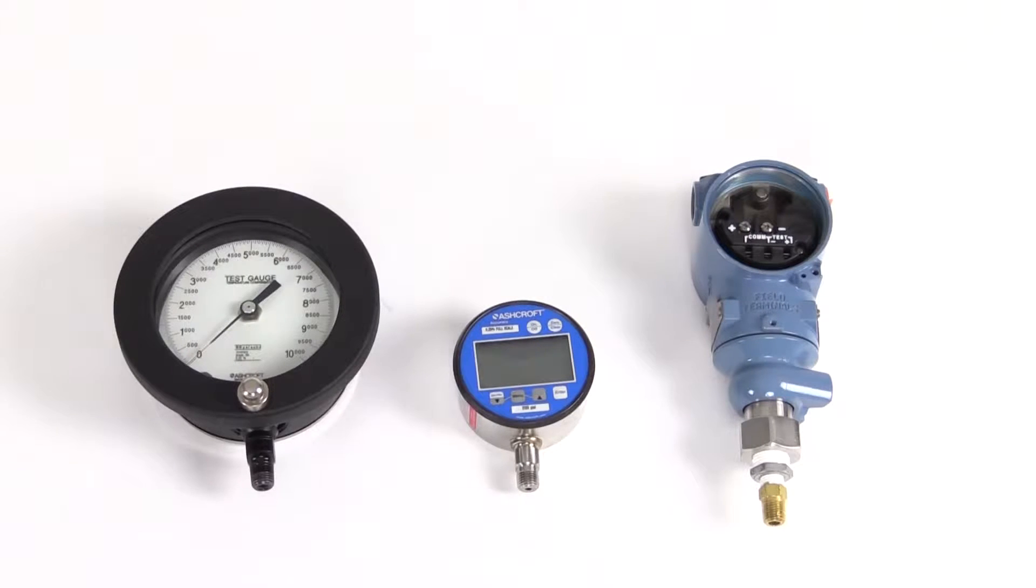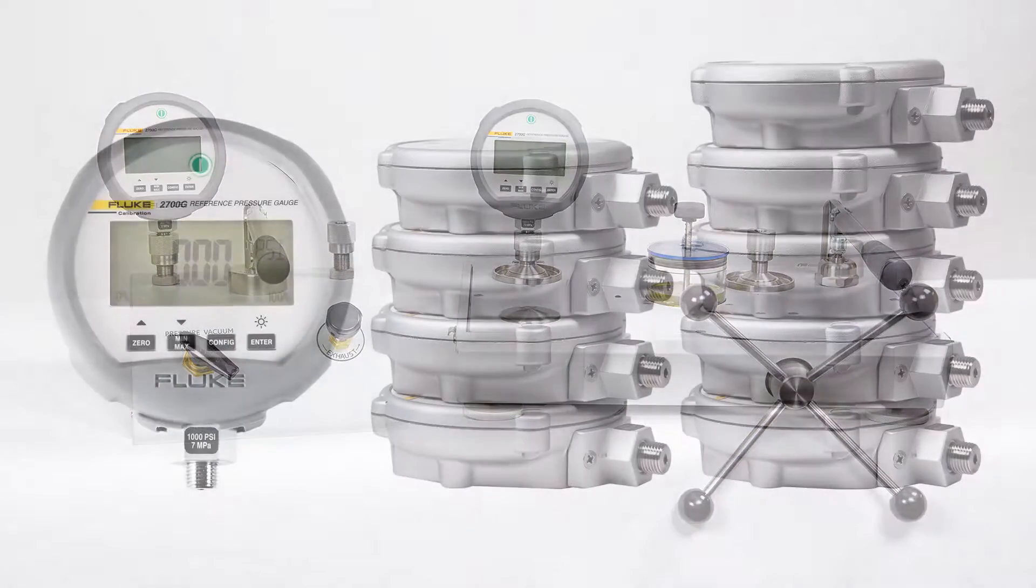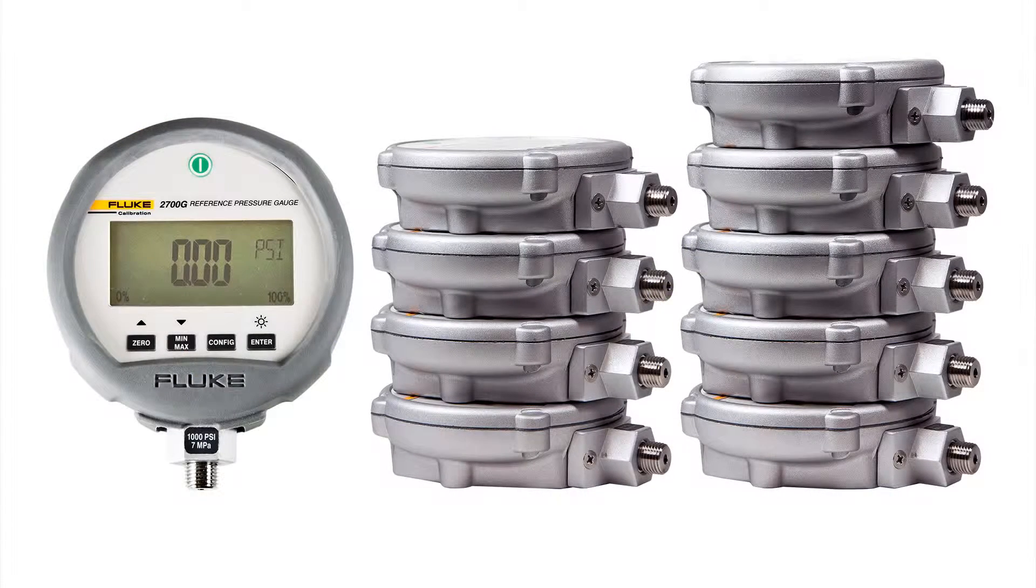The Fluke calibration 2700G reference pressure gauges and P5500 pressure comparators provide the accuracy, reliability, and capability you need to handle this wide pressure calibration workload. The 2700G reference pressure gauge is available in nine different ranges.